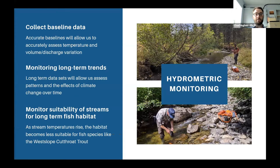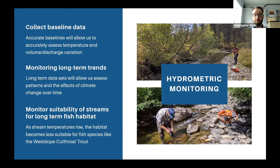Our hydrometric monitoring program currently has 12 temperature loggers deployed at seven streams across the watershed, with plans to bring this up to 20 this year. Data loggers were installed in 2020 as part of a long-term study to assess trends and patterns in stream temperature and water level across the Elk River watershed. Monitoring these streams over the next few decades will be important in determining the effects of climate change on Elk River tributary hydrology and assessing Westslope cutthroat trout habitat viability and potential refuge streams.